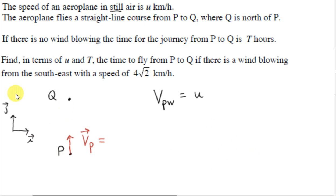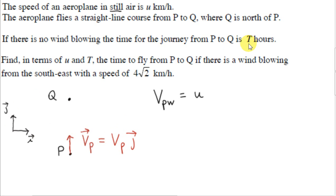We could have made the direction from P to Q the I direction, but it's more convenient to consider upwards as being in the positive J direction. So vector V_P can be written as V_P times J, where V_P without the arrow is the constant speed of the plane — always positive. So we have a vector pointing in the positive J direction. If there is no wind blowing, the time for the journey from P to Q is capital T hours. We are not given the distance from P to Q, so let's call that distance X. We want to eliminate X; everything will ultimately be in terms of U and capital T.